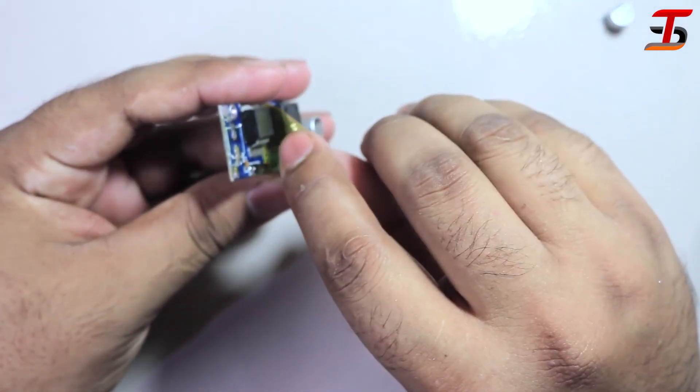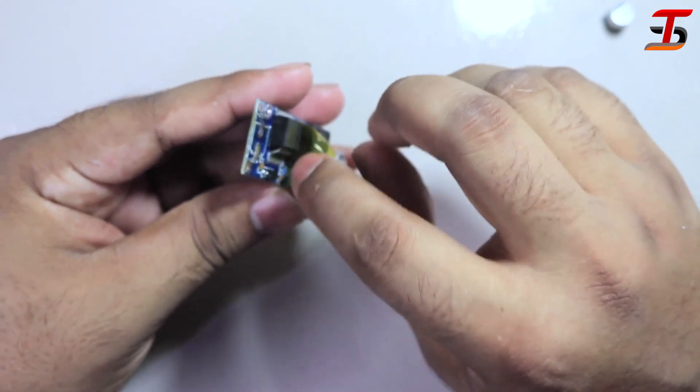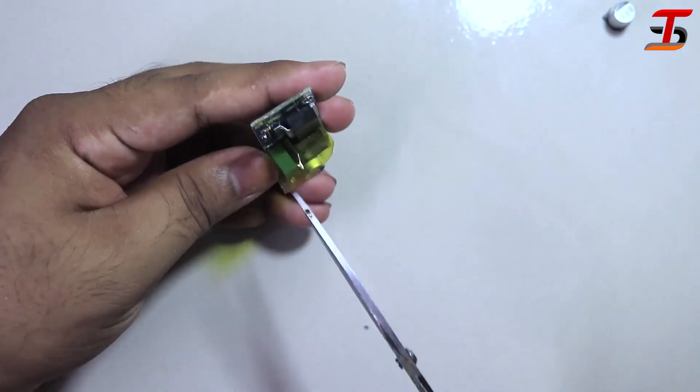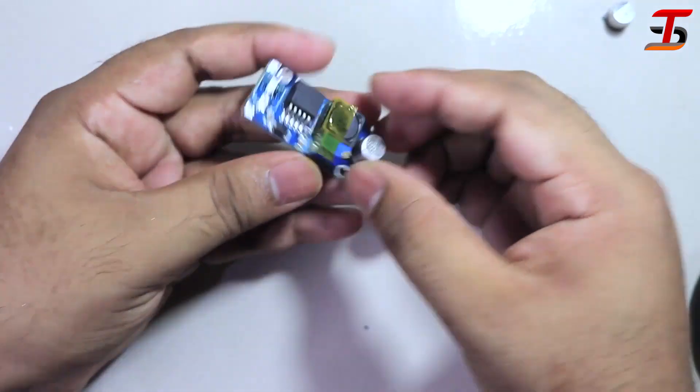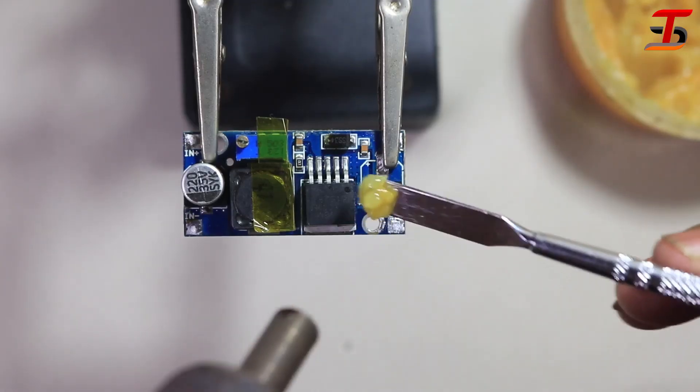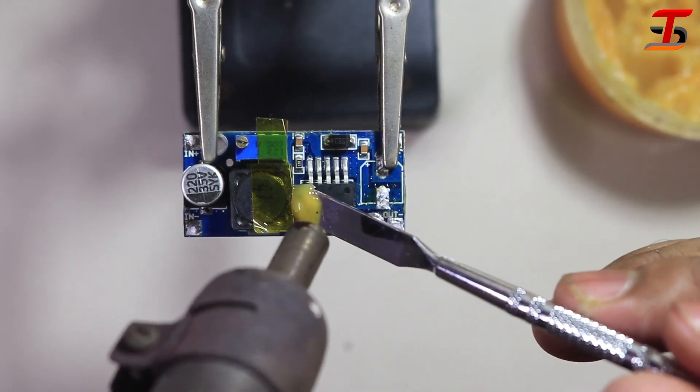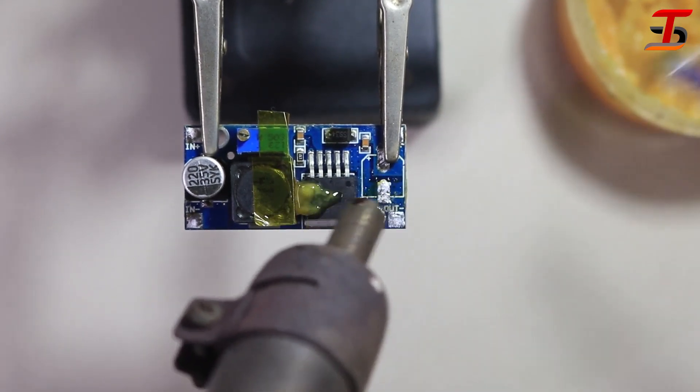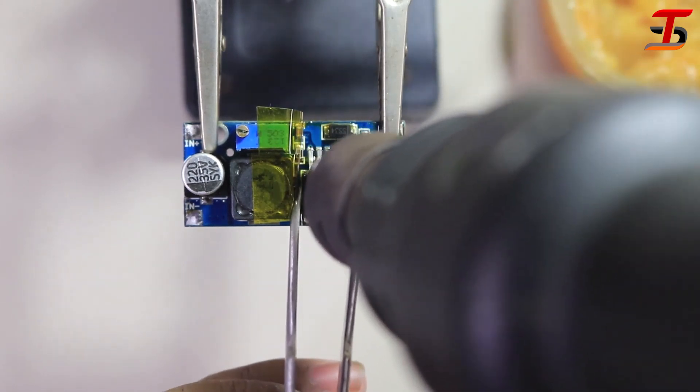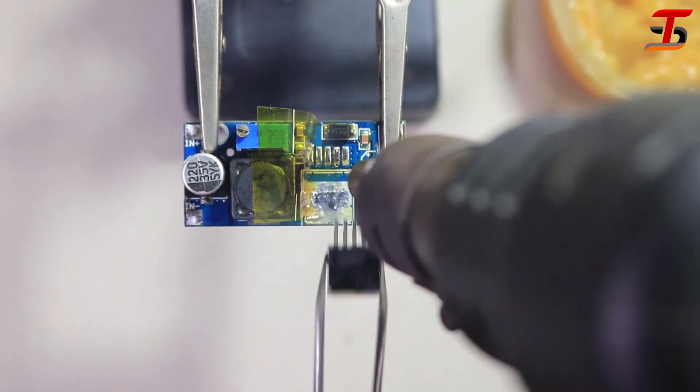To protect other components, I used heat sink tape. Then, I used paste. After that, using a hot gun, I remove the IC.